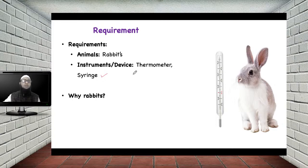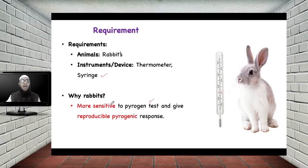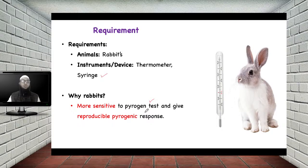Now let us see why we select the rabbit — why not rats, why not mice? The reason is that rabbits are more sensitive to the pyrogen test. Even a slight increase in temperature caused by pyrogen can be observed in the rabbit. It also gives a reproducible pyrogenic response, meaning if a rabbit shows an increase in body temperature, you can retest it and observe the same result in that particular rabbit.